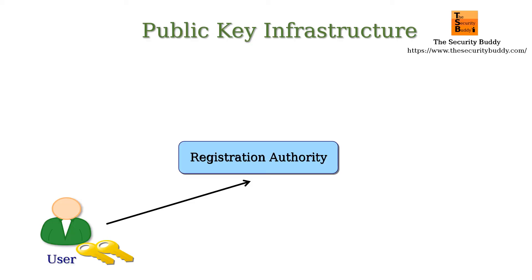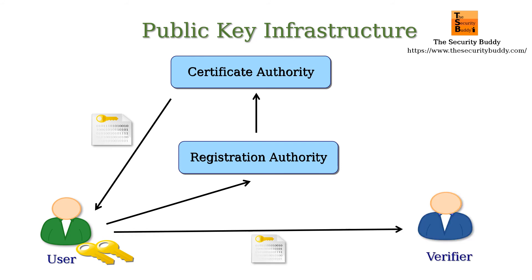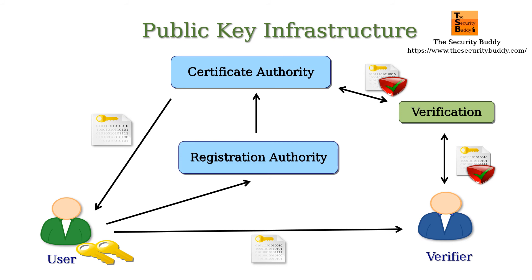To summarize, the Registration Authority verifies the identity of the entity. The Certificate Authority signs and issues the digital certificate, and if an entity wants to verify the digital certificate, it does so with the Certificate Authority. This is how the public key infrastructure works.